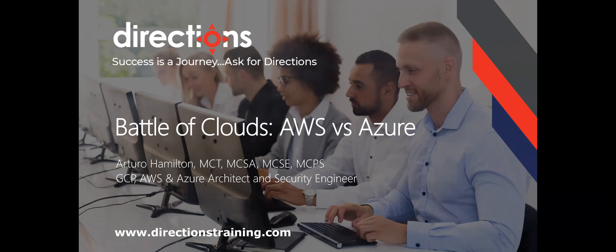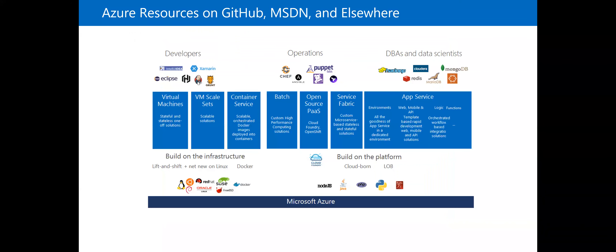First, we're going to talk about the usage of Azure resources, because this differs a little bit from what we have in AWS. On the backend, we have a complete solution based on Microsoft cloud support. We can have hundreds if not thousands of sources we can include — developing solutions, operation solutions, and data management solutions. For example, you can build a virtual machine or a logic computer that can scale itself.